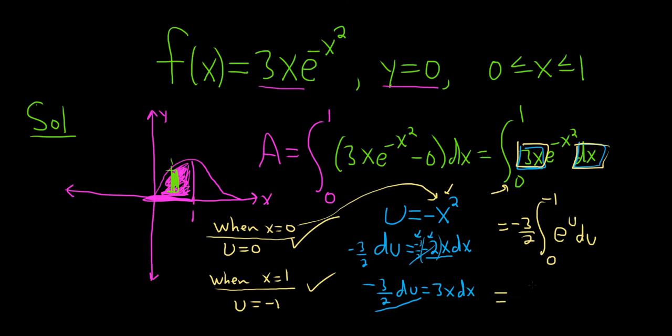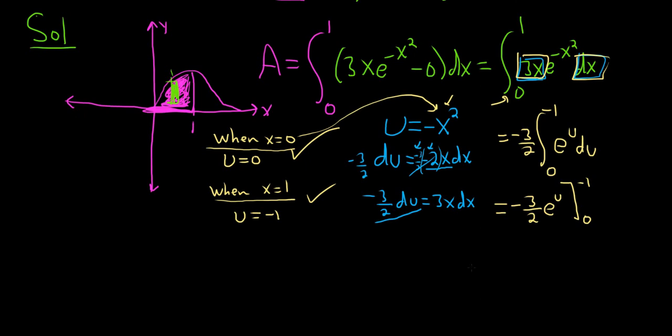When you integrate e to the u, you just get e to the u. So this is negative 3 halves e to the u, and we're going from 0 to negative 1. So first you plug in the negative 1. We get negative 3 halves, bracket, e to the negative 1, minus e to the 0. So this is negative 3 halves. e to the negative 1 is 1 over e, and then e to the 0 is 1. So this would be the final answer.